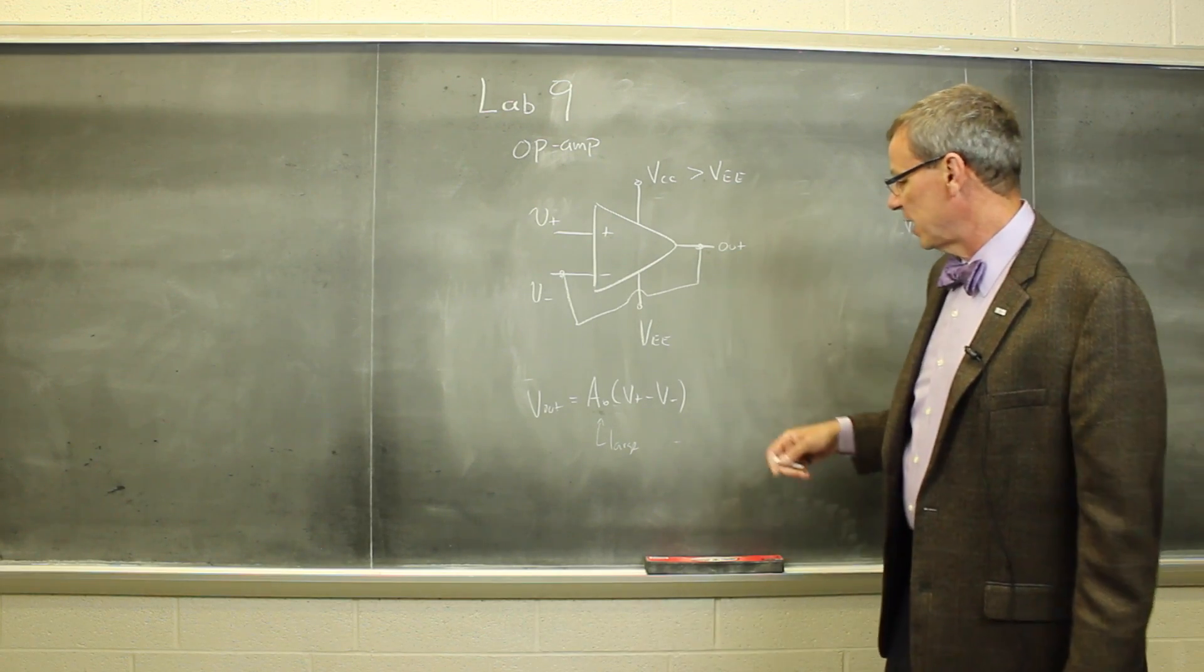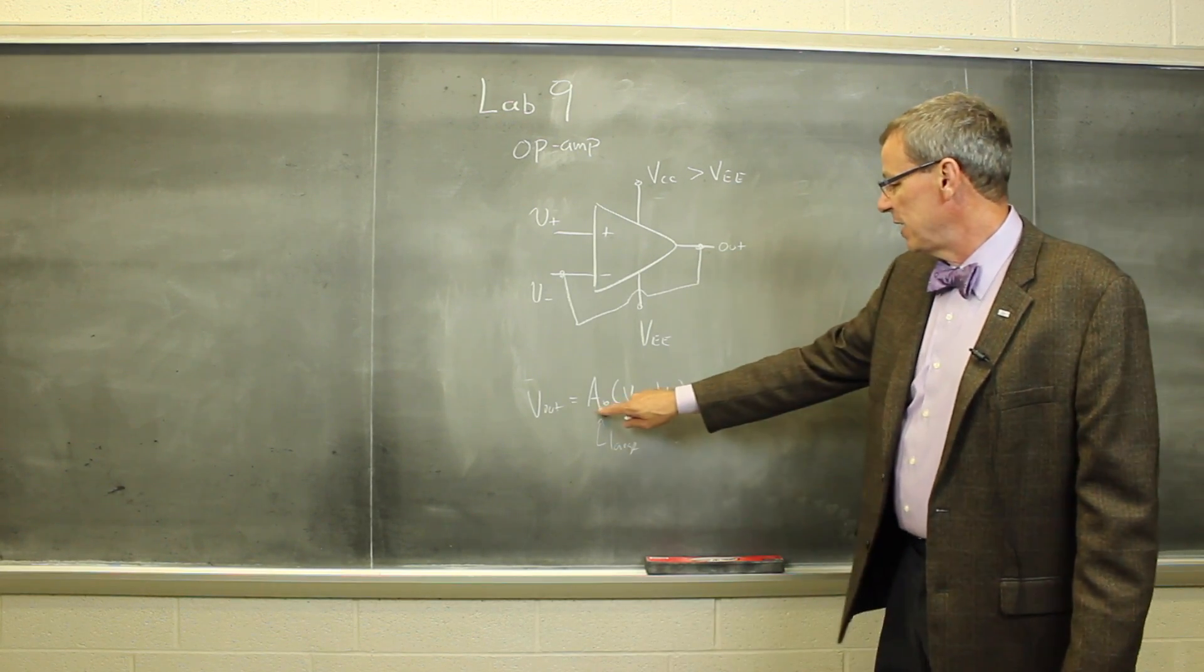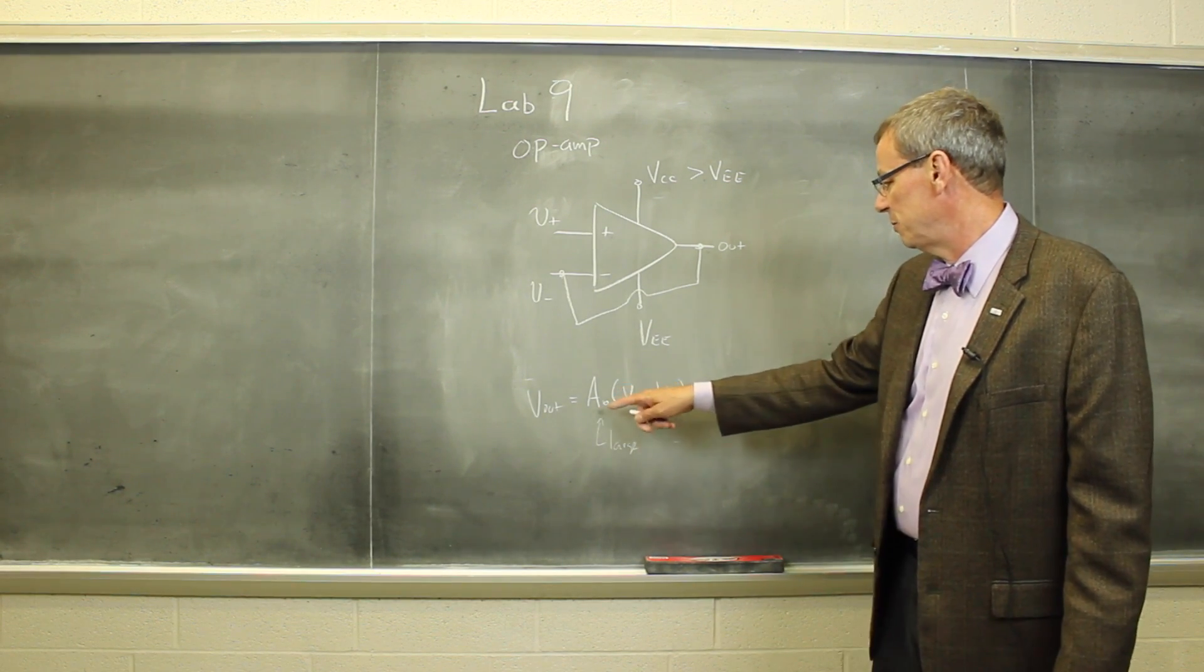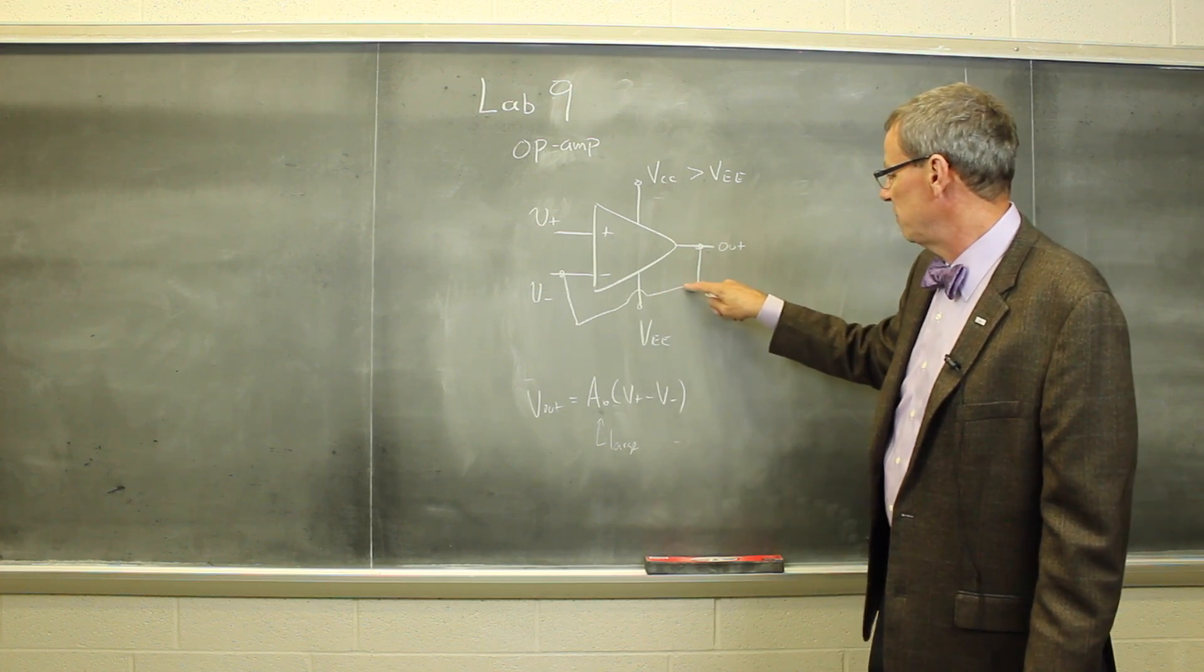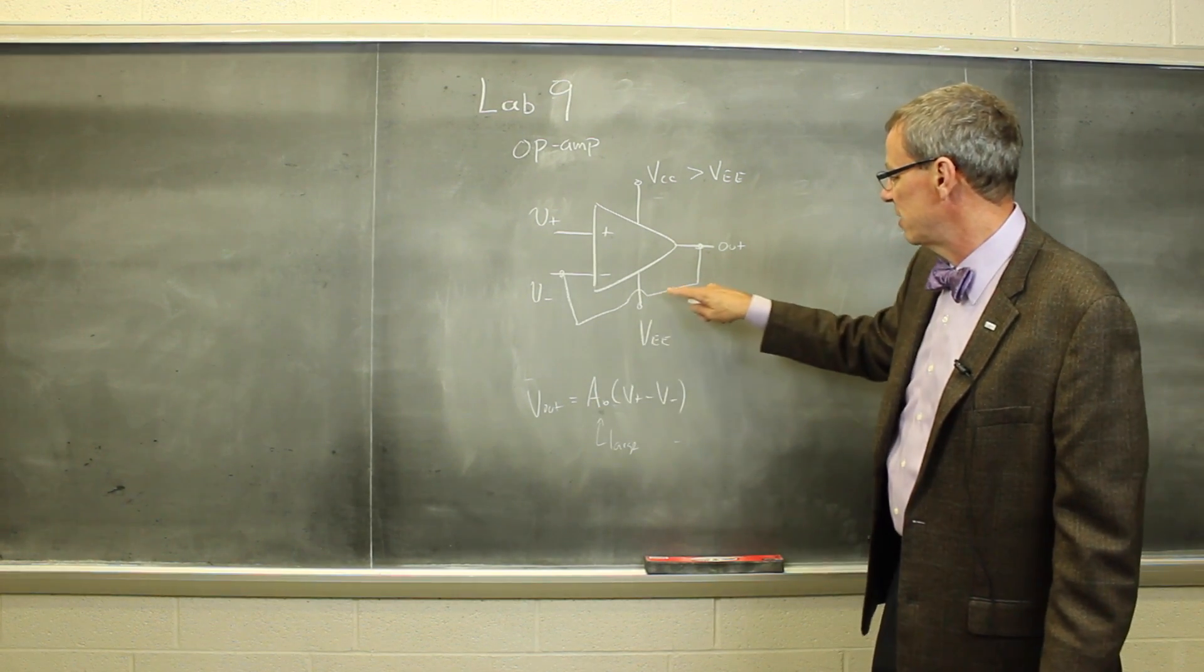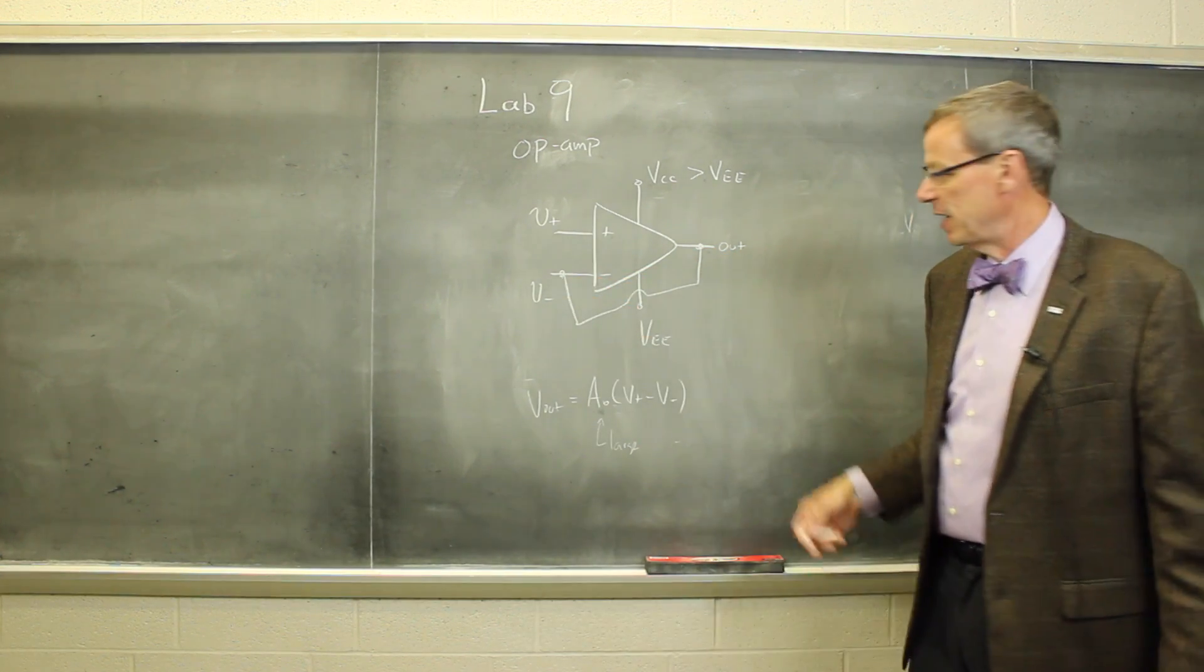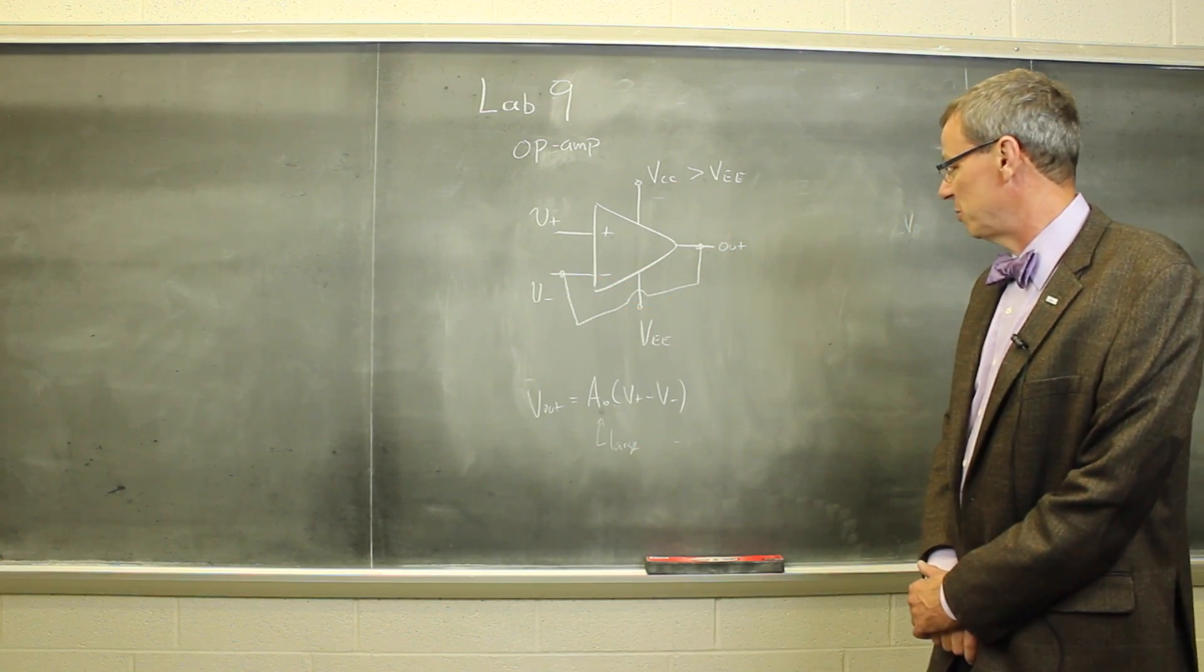When we do that feedback, we stabilize this, and we get a gain that's smaller than this A0, but is constant. And we derived in the text that basically the constant is independent of this A0. It depends on what fraction of this output we're feeding back into the input, and that we can control very precisely with resistors.